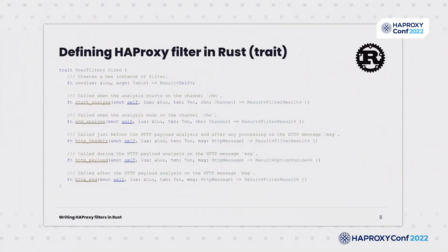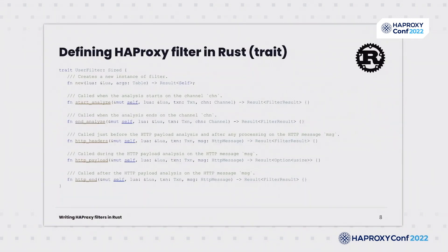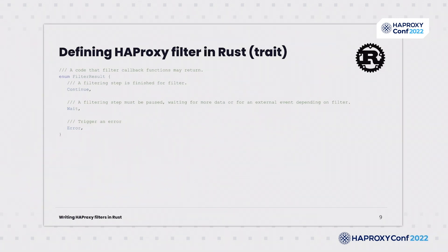The Rust interface to write filters is more safe and can automatically handle such situations to continue request or response processing. On this slide, we can see a Rust trait used to write filters. Traits are similar to what is called an interface in other languages. By implementing this trait, we can add a new filter. There are a few callbacks that you can attach when writing a filter, but only a new function is required just to make a new instance. As you can see, all the input arguments and output results are typed — for example, transaction channel or HTTP message.